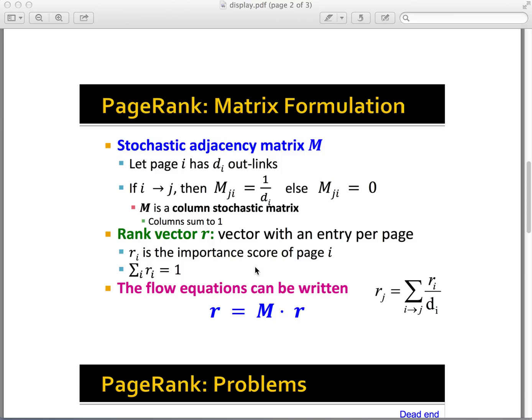We define the rank vector r. Ri is the importance score of page i and the sum of elements in r is 1. Then the flow equation will be r equals M times r.